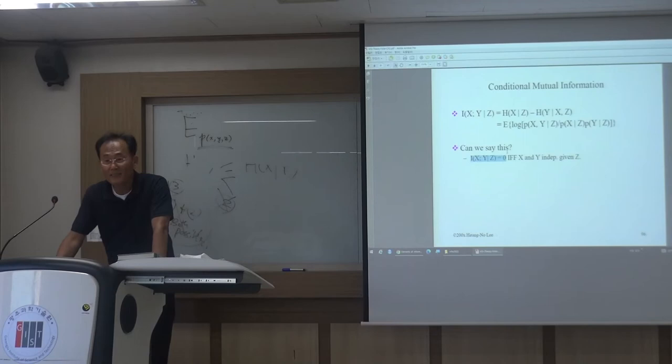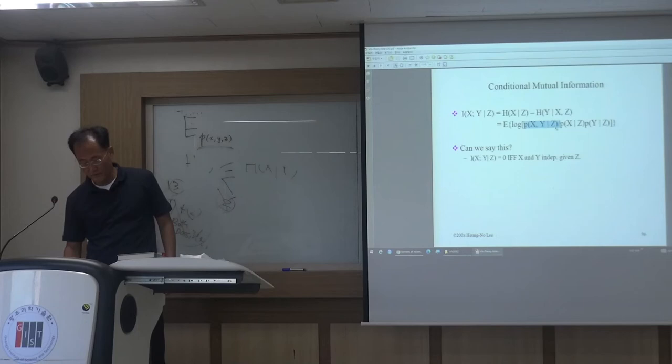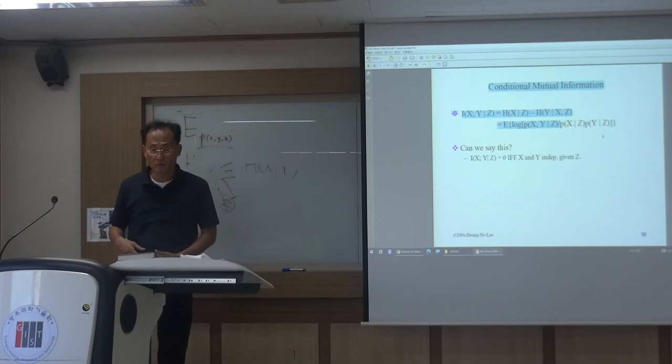We can say mutual information between X and Y given Z equals zero if and only if X and Y are independent given Z. That's just the definition — if the joint conditional distribution equals the product of the marginals for all realizations of X, Y, and Z, then they are conditionally independent.